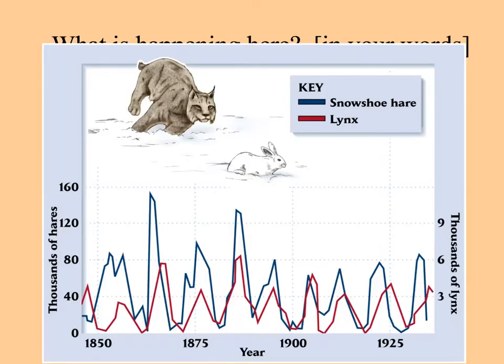Here is a graph of those data, with thousands of hares on the left y-axis and thousands of lynx on the right y-axis — note the different scales — and time across the bottom x-axis. The dark blue line represents the numbers of the hare, the prey; the red line, the numbers of the lynx. I'd like you to look at this graph and tell yourself in your own words what's happening here.